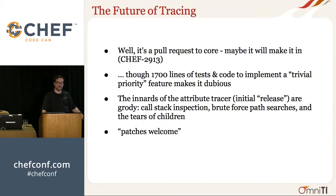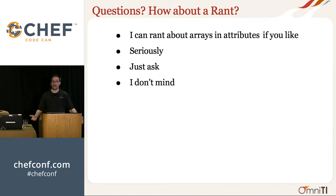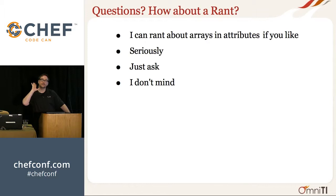The future of this: it's a pull request — maybe it'll make it in, though it is about 1,700 lines of changes, 900 of that in testing. The innards are pretty gnarly — the mechanism is call stack introspection. Whenever a set call happens, it tries to examine the call stack and figure out what happened. There's also some brute force path searching. That's my end. Anyone who wants to stick around and talk, please feel free. I'm going to try and do some office hours afterwards in the Morena room, and if you want to hear me rant about arrays and attributes, I've got a rant for you. Thank you.